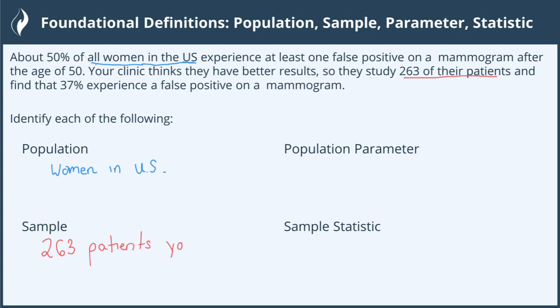Next, we turn to what we measured or what values we got. The parameter comes from the population — notice they both start with P: population parameter. When we looked at the entire population, we had 50% of women with that false positive. That is the population parameter, or the value that applies to the entire population.